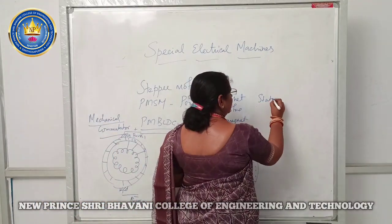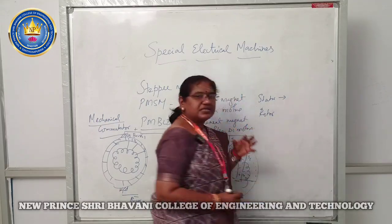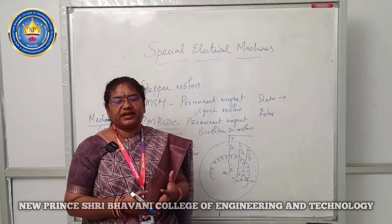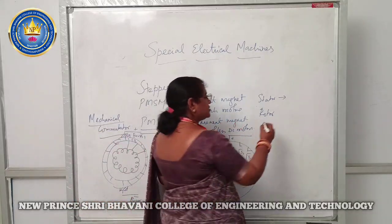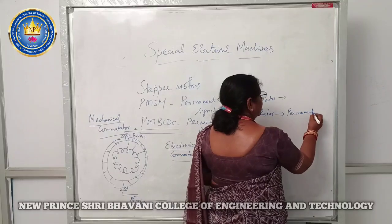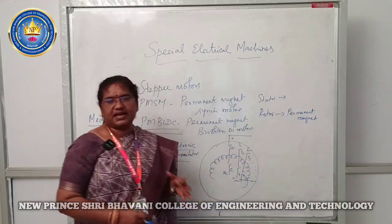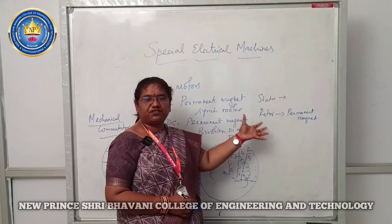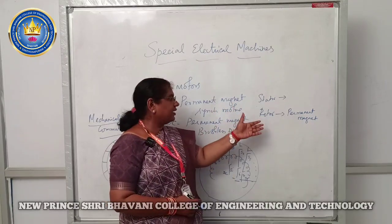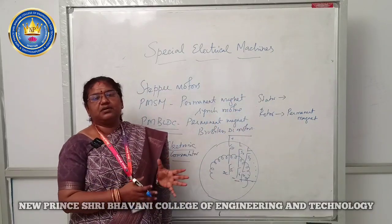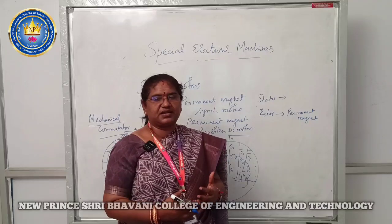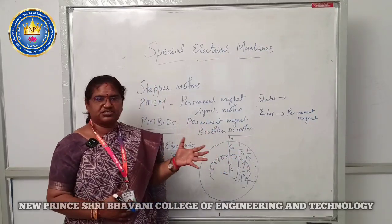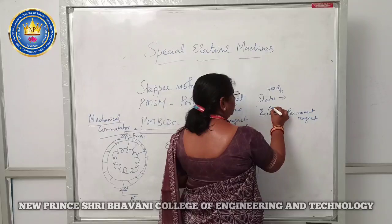In the permanent magnet brushless DC motor, there is a stator and a rotor. The stator has slots in its inner periphery where stator windings are placed. The rotor is made with permanent magnets, replacing the electromagnets used in normal motors. Using permanent magnets improves the size and operation of the machine. Notably, the number of stator poles and rotor poles are equal in a PMBL DC motor, unlike some other machines where they may be unequal.